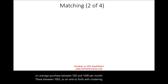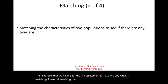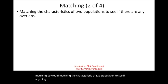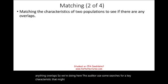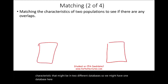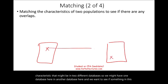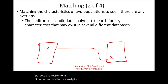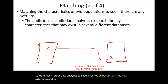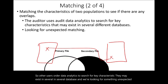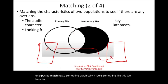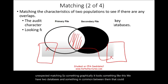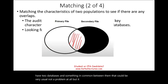The next tool we have for risk assessment is matching. What is matching? We're matching the characteristics of two populations to see if anything overlaps. The auditor uses some searches for key characteristics that might be in two different databases. We want to see if something in one database matches something in another database, looking for something unexpected — unexpected matching.